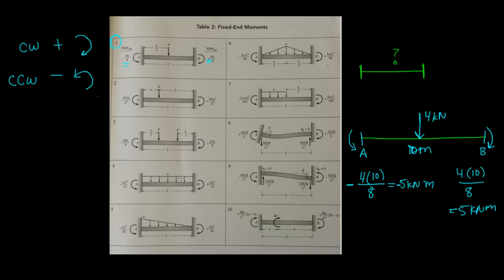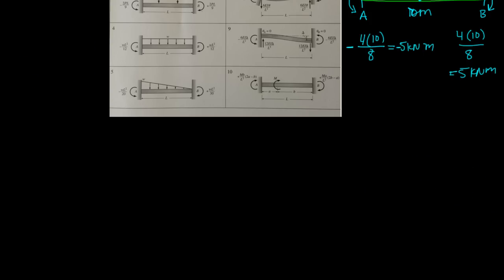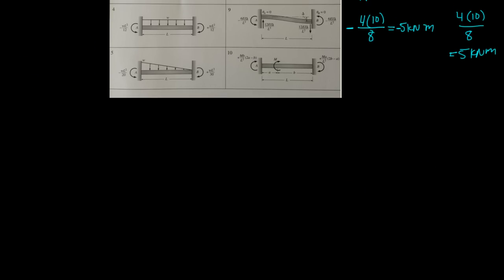Generally, for almost all fixed-end moments, the left side is usually negative or counterclockwise, and the right side is usually positive or clockwise. So let's actually do maybe one more. Let's say we had a beam.